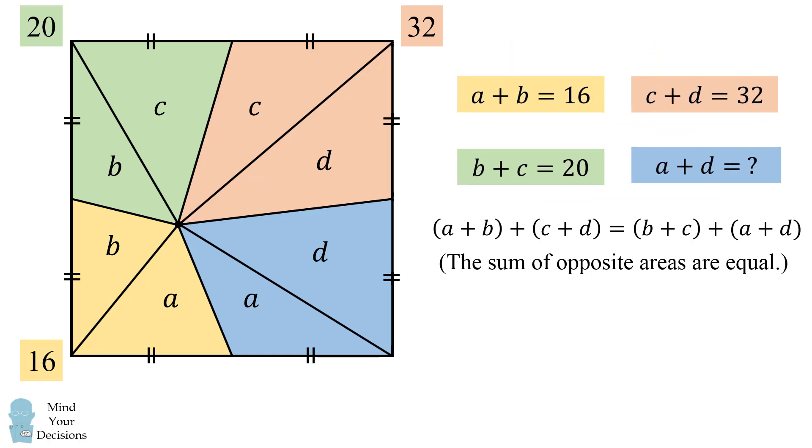So we know three of these areas, so we have 16 plus 32 is equal to 20 plus the unknown area of A plus D. We then solve that A plus D is equal to 16 plus 32 minus 20, which is equal to 28, and that's the answer.